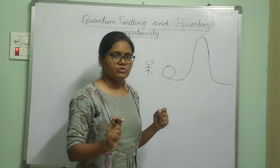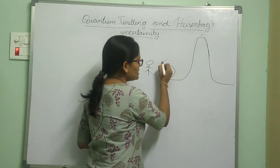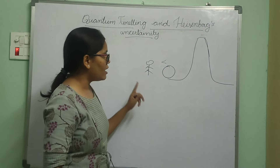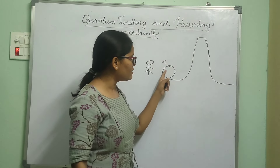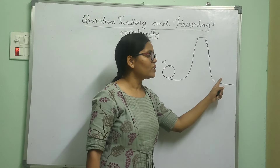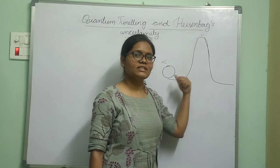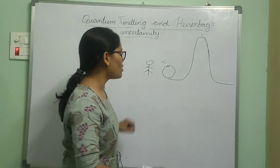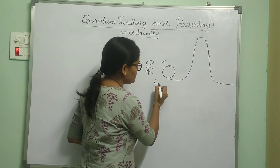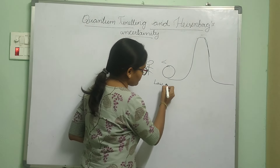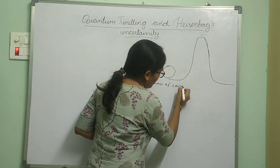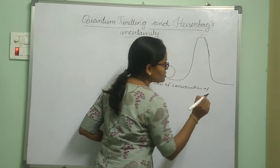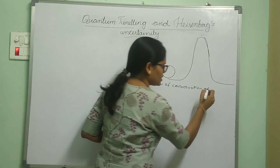Suppose this ball has less energy, and in spite of having less energy it had crossed the hill — that means it violated the most fundamental law of the universe: the law of conservation of energy. This is also the first law of thermodynamics.